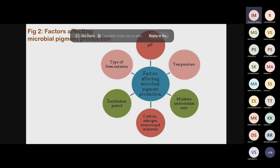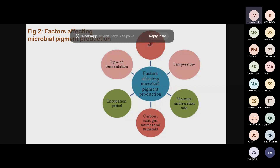Next is the type of fermentation — either solid state or liquid state. In solid state fermentation, all nutrition is provided in solid form, which is preferable for fungi and yeast. For most bacteria, liquid medium or solid-liquid medium is used depending on the substrate required. The type of fermentation must also account for all the above factors: pH, temperature, moisture, carbon-to-nitrogen ratio, and incubation period. These are the primary factors affecting microbial pigment production.